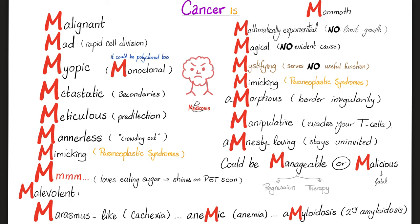Cancer could be manageable, or it could be malicious. If malicious, it kills via cachexia, anemia, and other techniques. If cancer causes chronic inflammation, it can lead to secondary amyloidosis. Don't forget that cancer is not the same as carcinoid — the word 'oid' means 'like,' so carcinoid is cancer-like. You have to send a sample to a pathologist, and the pathologist will tell you if it's benign or malignant — but the word does not imply cancer.